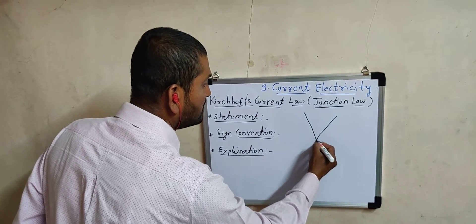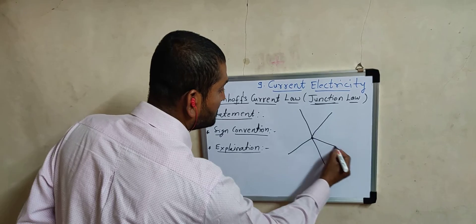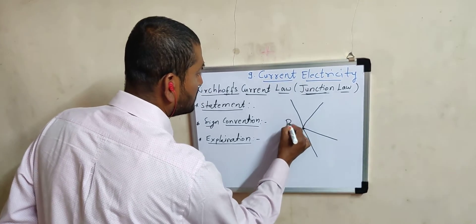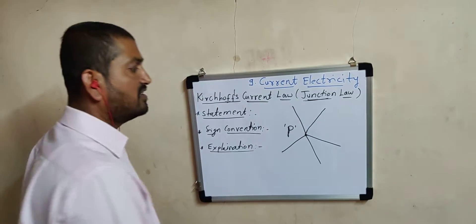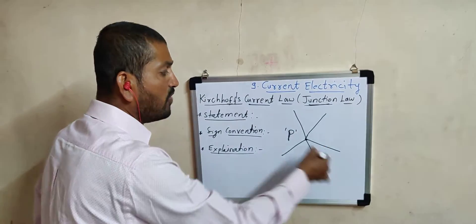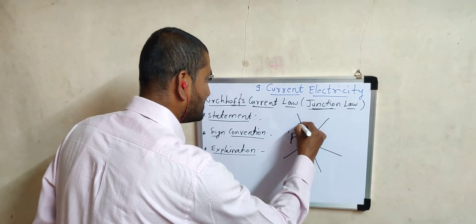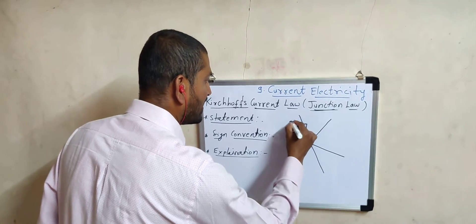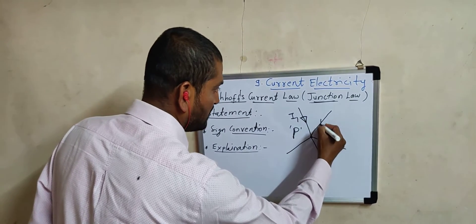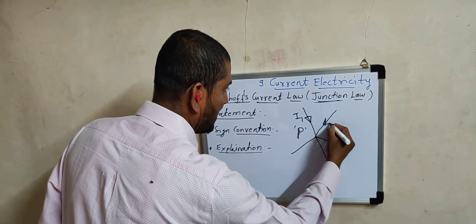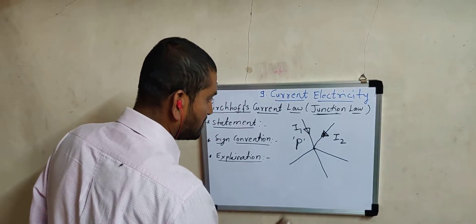Consider an example: there are five wires — wire one, wire two, wire three, wire four, and wire five — all connected at point P, which is the electrical junction under consideration. These five wires carry different currents. The first wire carries electric current I1, which is coming towards the junction. The second wire carries electric current I2, which is also coming towards the junction.